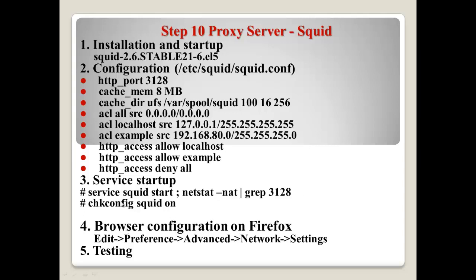After configuring all the lines in the Squid configuration file, you need to test using Firefox. Open Firefox and go to Edit > Preferences > Advanced > Network Settings, where you can set the hostname and port number. Then let's test.